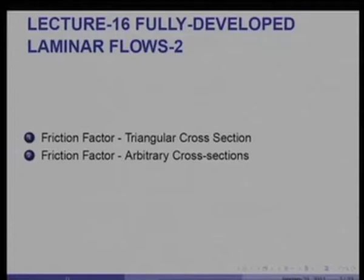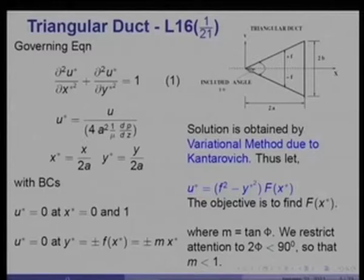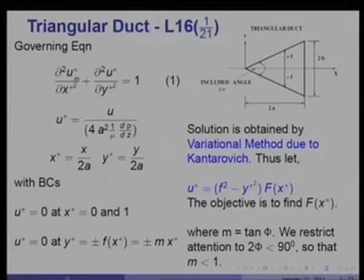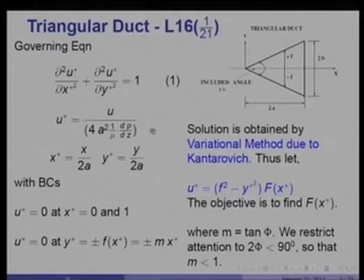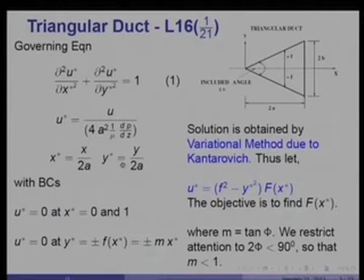Let us begin with the duct of triangular cross section and apply one method called the Kantorovich variational method. The figure shows a triangular duct of base 2b and height 2a with an included apex angle 2φ. The governing equation is d²u/dx² + d²u/dy² = (1/μ)(dp/dz), which I can non-dimensionalize with u* = u / (4a² · (1/μ)(dp/dz)), x* = x/(2a), y* = y/(2a). The origin is the apex of the triangle.